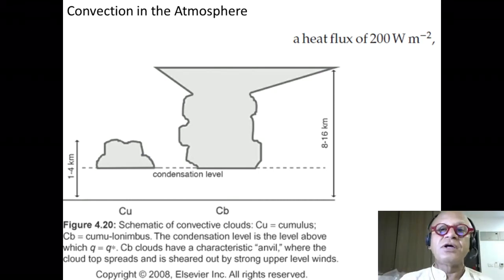There's advection of humidity in these upper levels by the strong winds. Typically winds get stronger in the upper level. Direction also changes. We will see why that is.